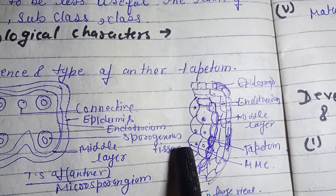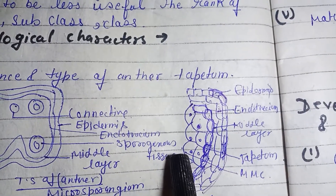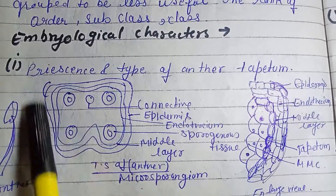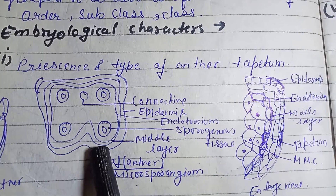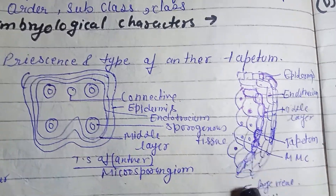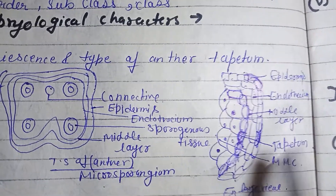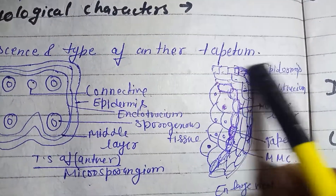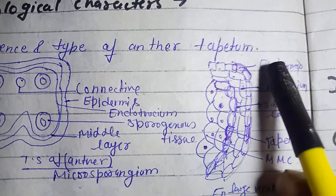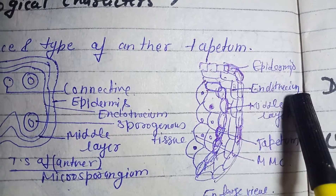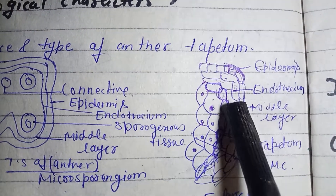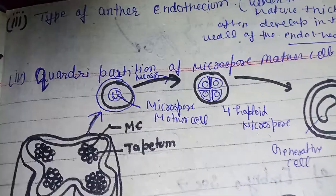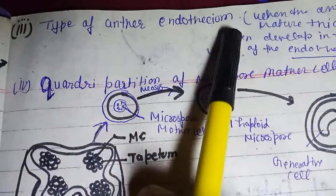Looking at the anther structure, this is a transverse section of the microsporangium. In the enlarged view, we can see the tapetum and outermost endothecium. The layers are: endothecium, middle layer, tapetum, and microspore mother cell. Next is the type of anther.